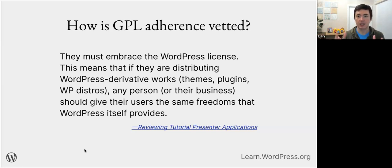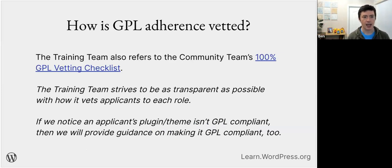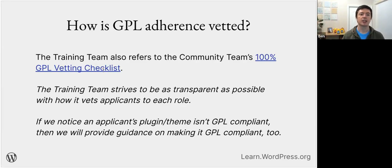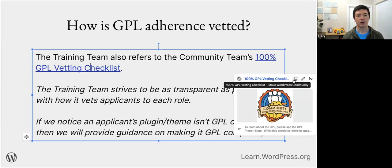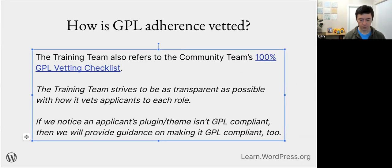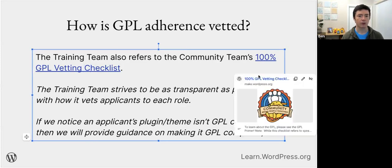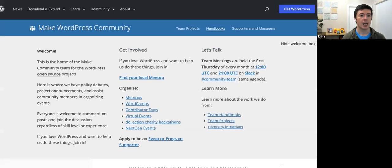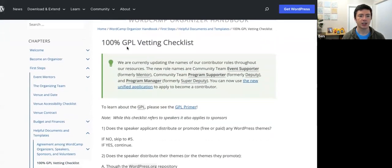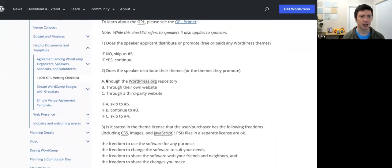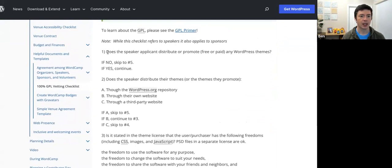How we do this specifically: the WordPress community team has created a 100% GPL vetting checklist. It's essentially a 10-step yes/no checklist — you walk through it and at the bottom it says whether this person is GPL compliant or not. This is probably one of the best resources we have. It also helps applicants understand what process they'll be going through. We try to be as transparent as possible — this vetting doesn't happen in secret.